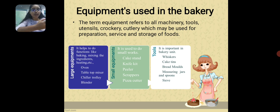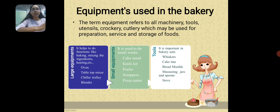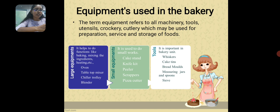We can list some large equipment like oven, chiller, trolley and blender. Small equipment is helpful in making small tasks like peeler, knife kit and cake stand. Tools are also important in the bakery unit. Some tools include cake tins, bread molds, measuring spoons and measuring jars.